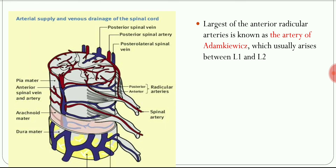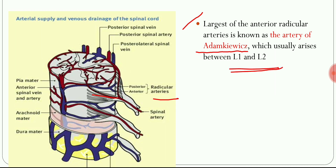One of the anterior radicular arteries, at the level of L1 and L2 vertebral level, is the largest. This largest radicular artery is known as the artery of Adamkiewicz — this named artery is important and is usually asked in MCQs.